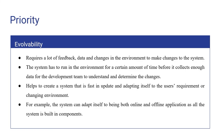Immobility is placed third in the prioritization of design quality because it requires a lot of feedback, data, and change in environment to make changes to the system. The system has to run in the environment for a certain amount of time before it collects enough data for the development team to understand and determine the change.